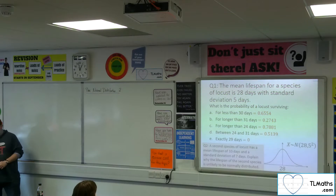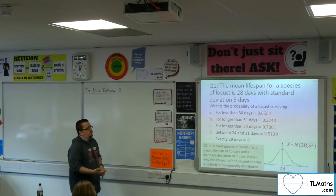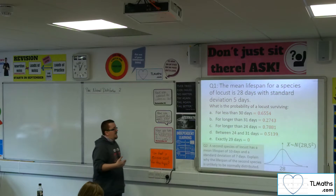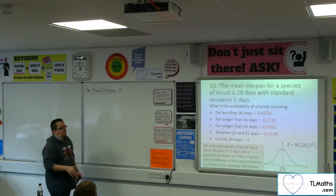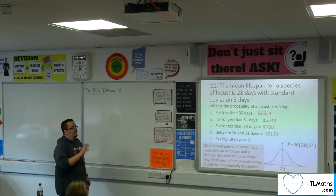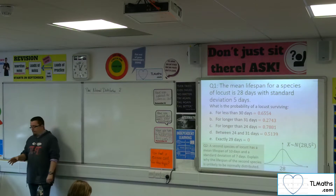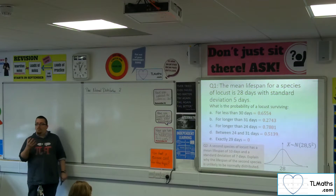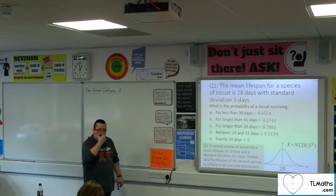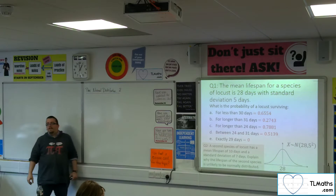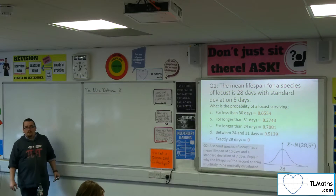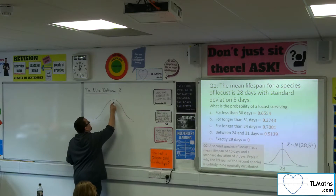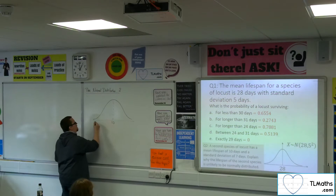The second question is not something that we looked at last time, but is really a consideration of how the normal distribution works and what it looks like. A second species of locust has a mean lifespan of 10 days and a standard deviation of 7 days. Explain why the lifespan of the second species is unlikely to be normally distributed. Oliver: if 99.7% of the data has to be within three standard deviations, then taking away three lots of 7 from the mean of 10 gives a negative number, which doesn't make sense because it's a height.